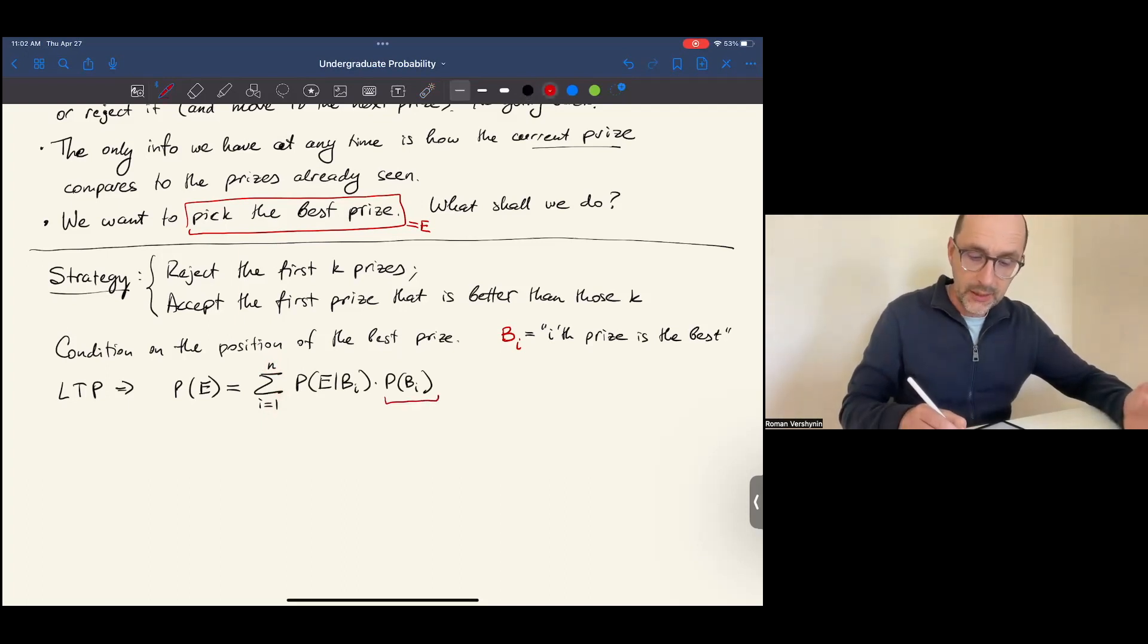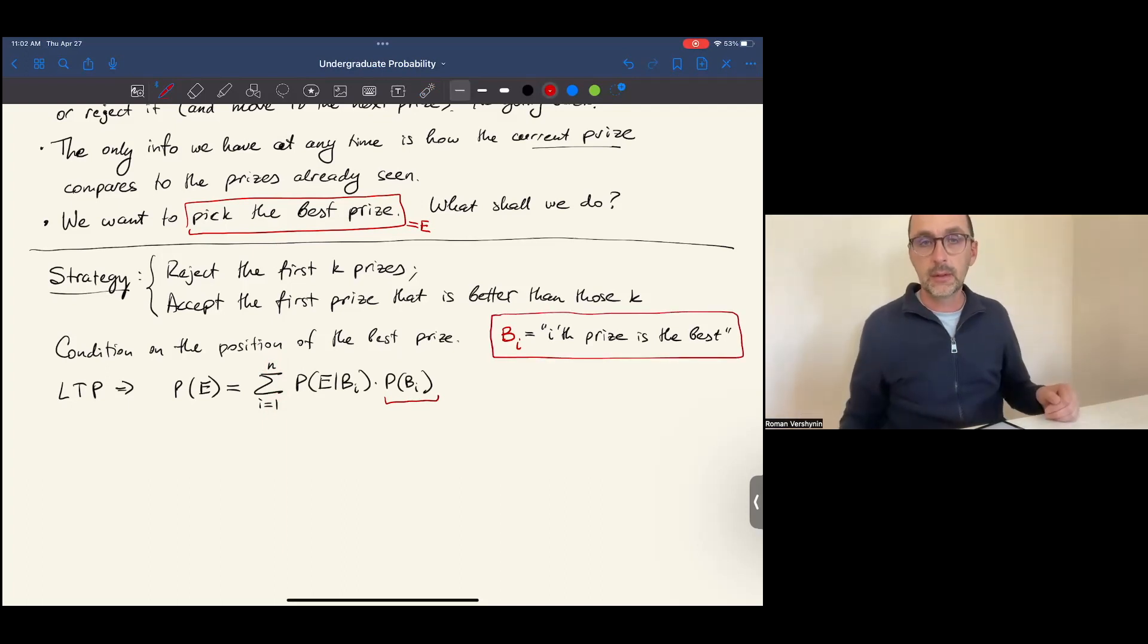Let's compute all these terms. What is P of bi? It is the probability that the i-th prize is the best. It is the unconditional probability, our belief whether the i-th prize is the best before seeing anything else, before this game. All prizes look the same to us before the game, so our belief is that any prize is equally likely. So that probability is 1 over n.